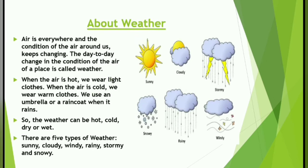About weather: Air is everywhere and the condition of the air around us keeps changing. The day-to-day change in the condition of the air of a place is called weather. When the air is hot we wear light clothes; when the air is cold we wear warm clothes. We use an umbrella or a raincoat when it rains. The weather can be hot, cold, dry, or wet. There are five types of weather: sunny, cloudy, windy, rainy, stormy, and snowy.